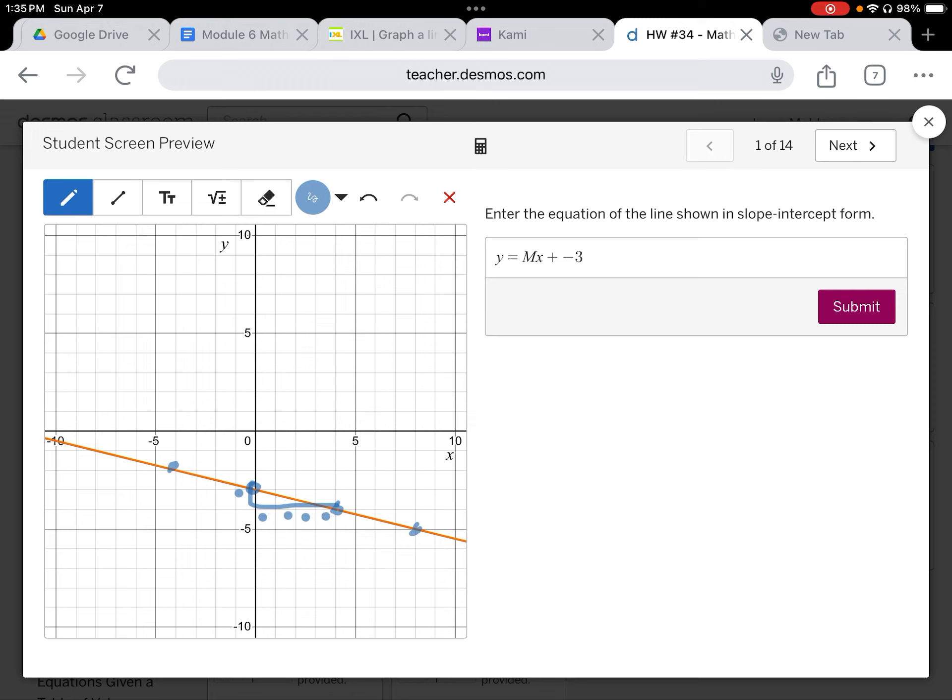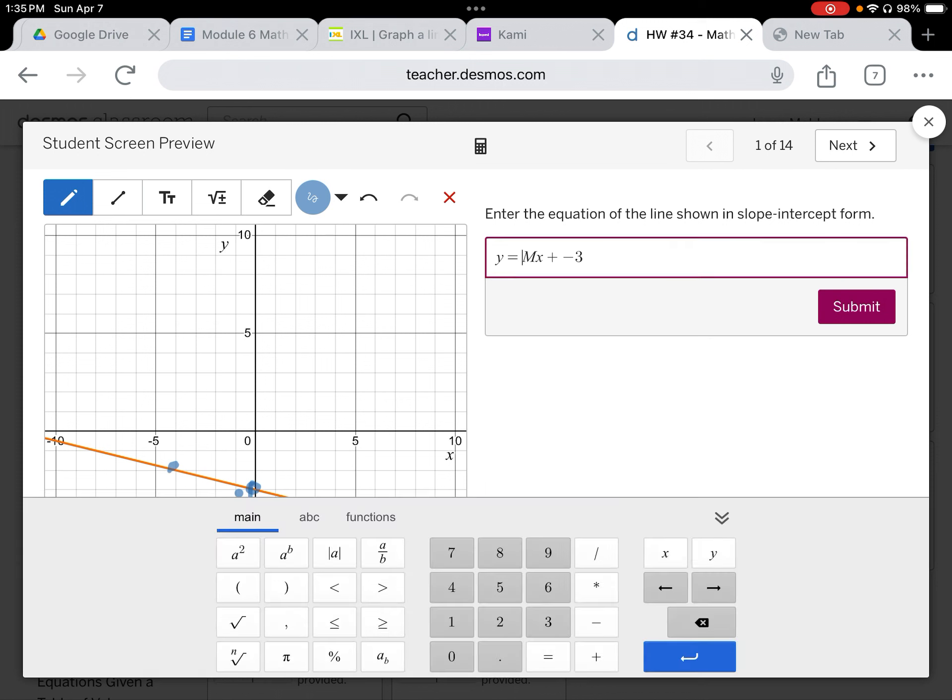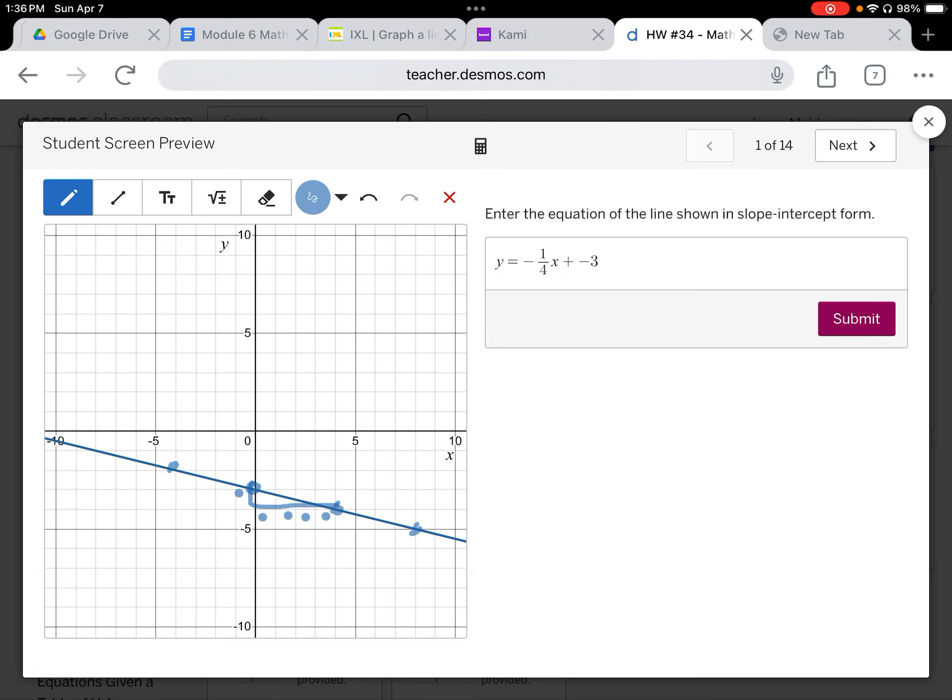We're going to go in here and edit this, and it was down one and over four. And what we should see is a line that overlaps the existing line. There it is. We'll press submit.